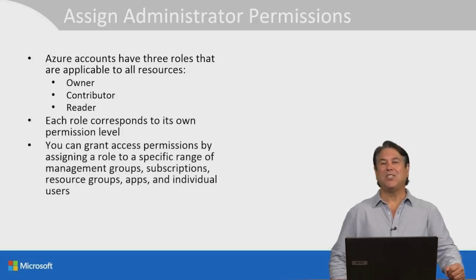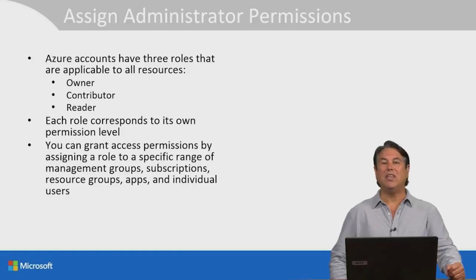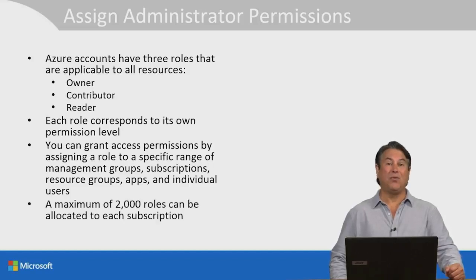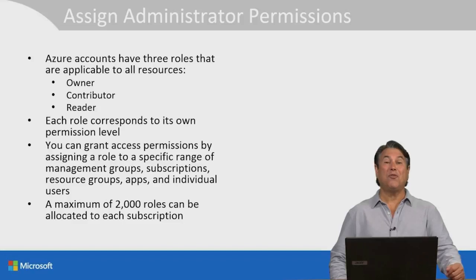You can grant access permissions by assigning a role to a specific range of management groups, subscriptions, resource groups, apps, and individual users. Keep in mind, for the exam, a maximum of 2,000 roles can be allocated to each subscription. Since this is our first lesson, let's go ahead and pop over to the lightboard and see how Azure Active Directory and tenants work together.